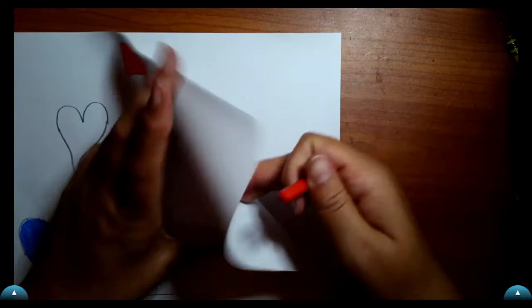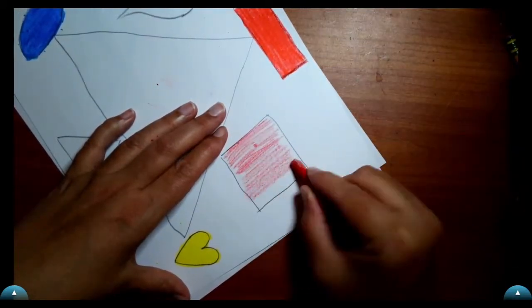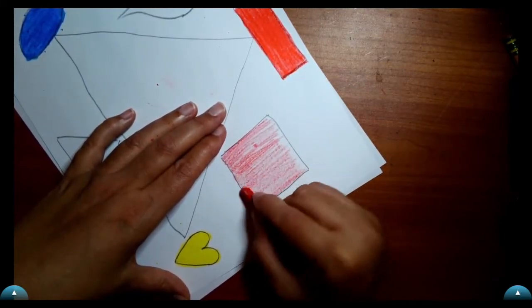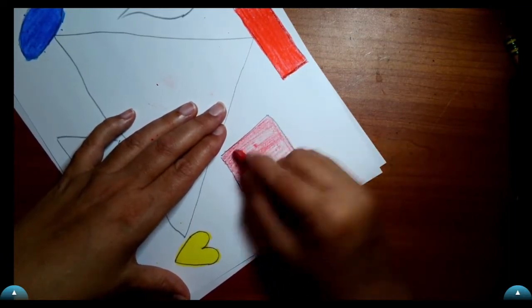So first of all, I'm going to start with red. Notice I'm not putting a lot of pressure on the paper. So I'm touching it softly just to put a little bit of red. It's not as dark as my red shape.